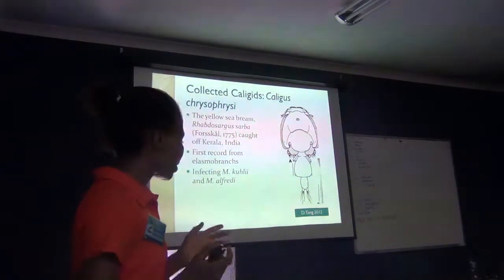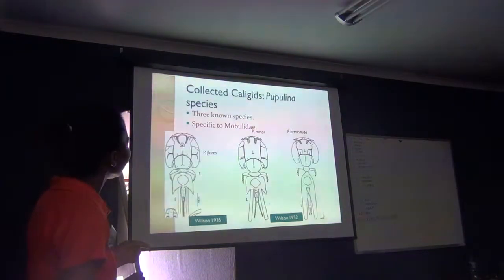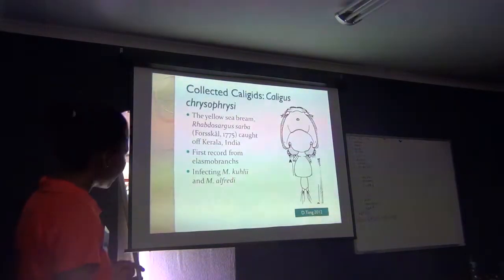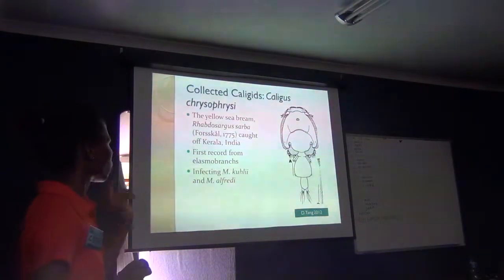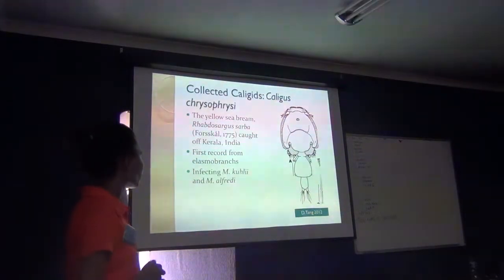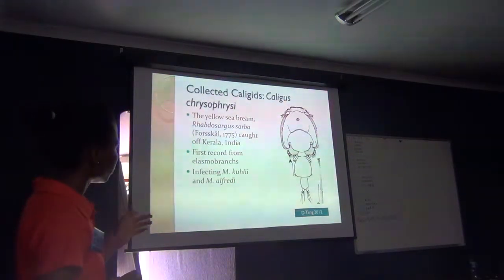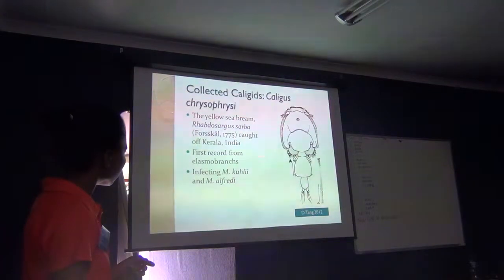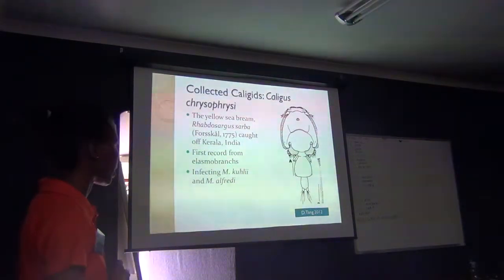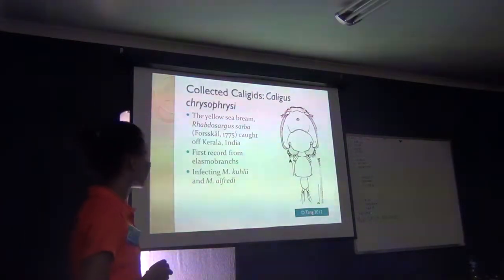Starting with the family Caligidae, we found Caligus chrysophrys. This species has only been reported from the yellow sea bream, Rhabdosargus sarba, caught off Kerala in India. So this marks the first record of this species on an elasmobranch, and we were able to collect it from Mobula kuhlii and Manta alfredi.